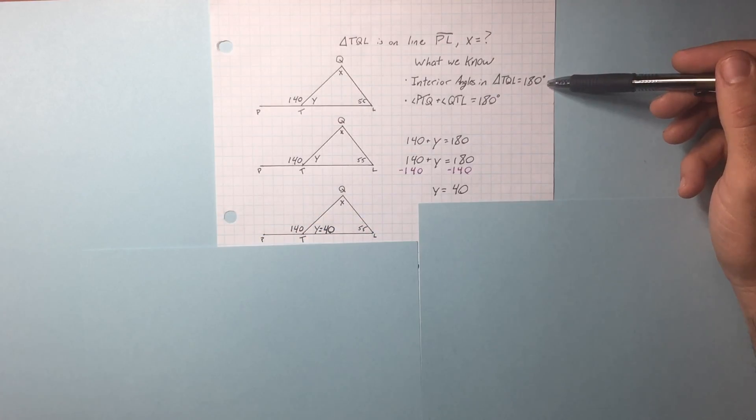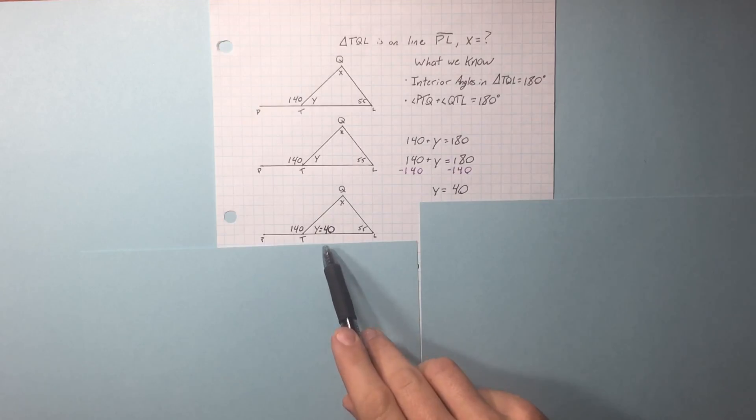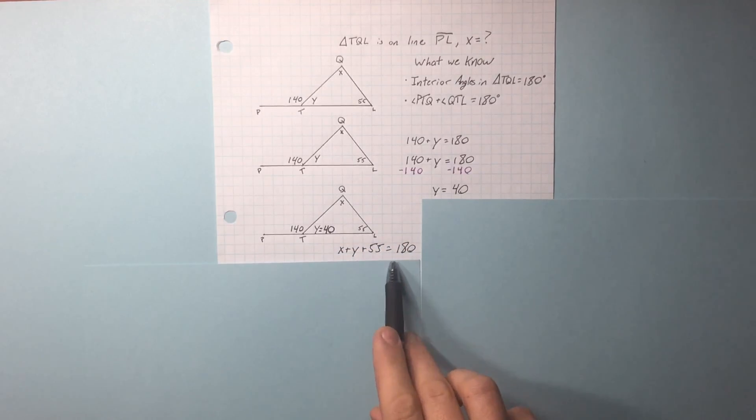Let's go back to the inside angles of a triangle equaling 180. Now we have two out of the three. So rather than looking at an equation with two variables, which this on its own is unsolvable, plug in what we know for y.